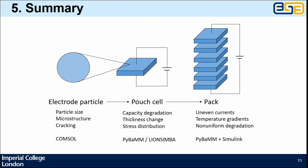In summary, our research is across multiple scales of pack, cell, and particle levels. At particle level, we have studied different particle size, microstructure, and the cracking behavior in one particle. At cell level, we are more interested with capacity degradation, thickness change, and stress distribution across electrodes. At pack level, we are more focused on uneven currents, temperature gradients, and non-uniform degradation across individual battery cells. We hope our research work can help industry to analyze the battery performance across different length scales.